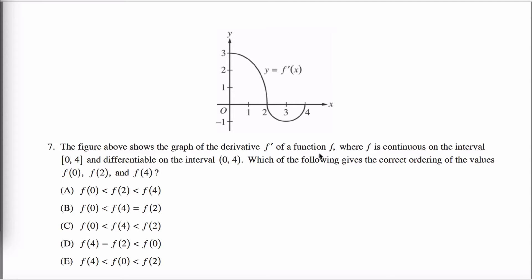You're told that f is continuous and differentiable in this interval, and you're asked to order f of zero, f of two, and f of four. So do not say that f of zero is three, because it's not necessarily three. It's f prime of zero that's equal to three.